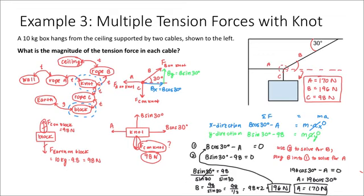This problem was slightly different because all of the ropes connected at a point we called the knot. We identified that we should draw our force diagram for the knot because the knot will have all tensional forces acting on it. That's essentially the only difference. Draw your interaction diagram, draw a force diagram for the knot, redraw showing angled forces as their components, and write out the sum of forces horizontally and vertically. Set those equal to mass times acceleration — which is zero — and solve the system of equations. This concludes the video tutorials for tension and static equilibrium. Please check Canvas for additional practice problems.